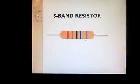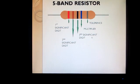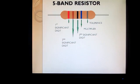Now we go on to the 5-band resistor. A 5-band resistor has 5 bands. We assign names similarly: the first band is the first significant digit, the second is the second significant digit, the third is the third significant digit, the fourth is the multiplier, and the fifth is the tolerance. Unlike the 4-band resistor which had 2 significant digits, the 5-band resistor has 3 significant digits, 1 multiplier, and 1 tolerance.